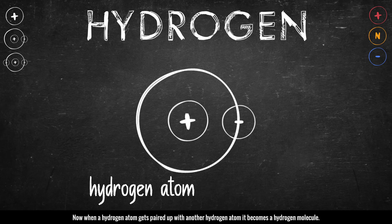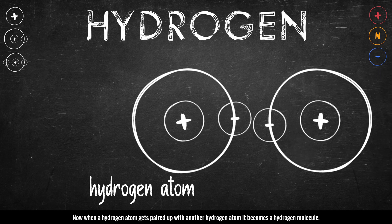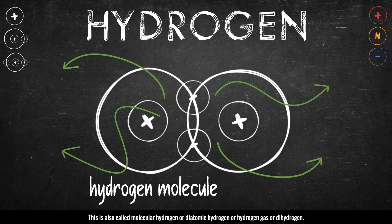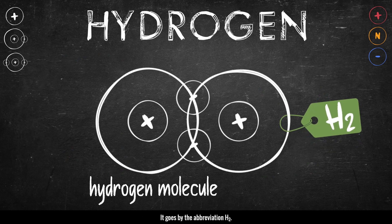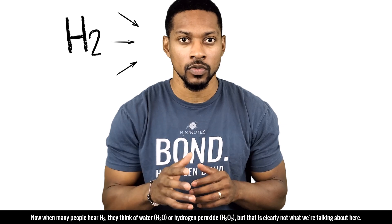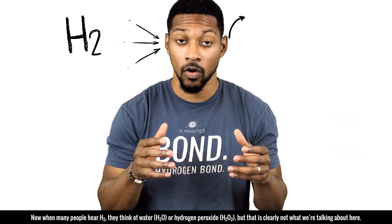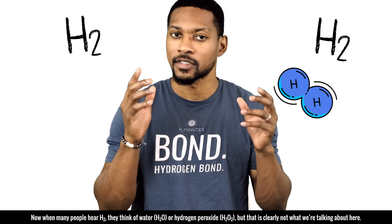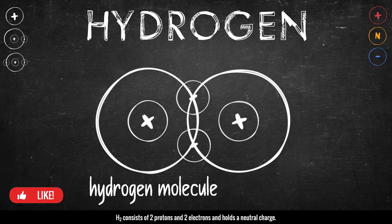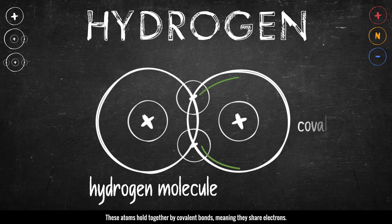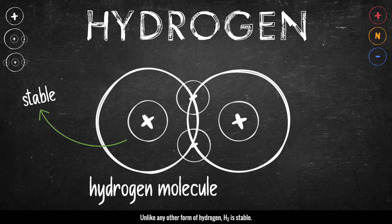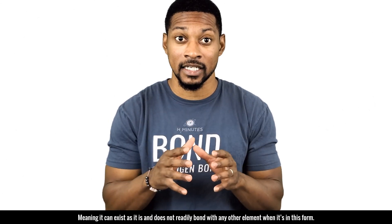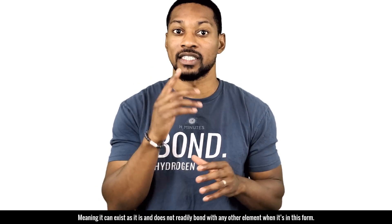But let's get back to our hydrogen atom. When a hydrogen atom gets paired up with another hydrogen atom, it becomes a hydrogen molecule. This is also called molecular hydrogen, or diatomic hydrogen, or hydrogen gas, or dihydrogen. It goes by the abbreviation H2. When people hear H2, they typically think of water, H2O, or hydrogen peroxide, H2O2 — but that's clearly not what we're talking about here. H2 consists of two protons and two electrons and holds a neutral charge. These atoms hold together by covalent bonds, meaning they share electrons. Sharing is caring, right?